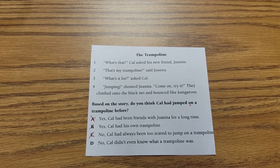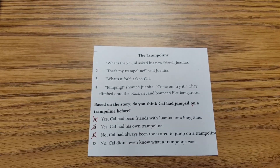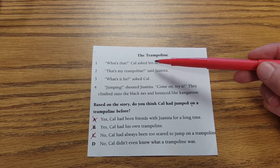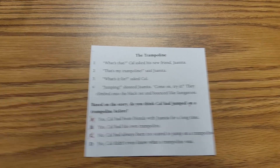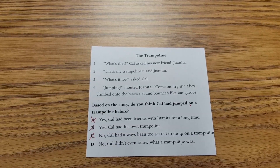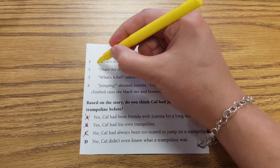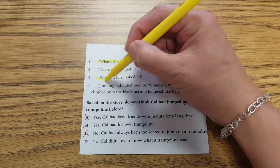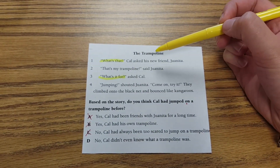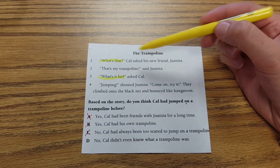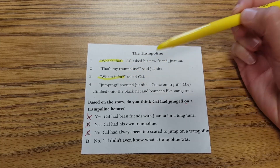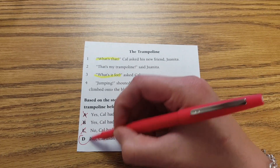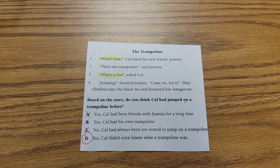Answer D: No, Cal didn't even know what a trampoline was. This is our best answer because both in line one and line three it shows us that Cal does not know what the trampoline was, and he also does not know how to use it. He asks 'What's that?' pointing to the trampoline, and he asks 'What's it for?' — how to use it. So do we think that Cal had jumped on a trampoline before? No, Cal didn't even know what a trampoline was.